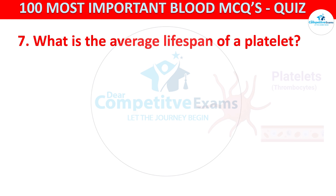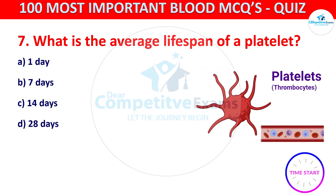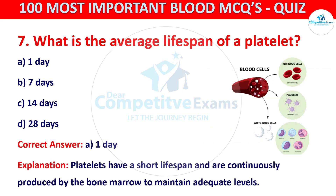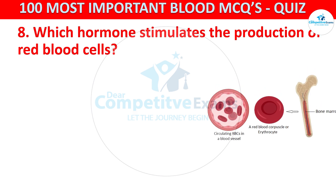What is the average lifespan of a platelet? Your options are one day, seven days, 14 days, or 28 days. The correct answer is A, that is one day. Platelets have a short lifespan and are continuously produced by the bone marrow to maintain adequate levels. Question number eight: which hormone stimulates the production of red blood cells?